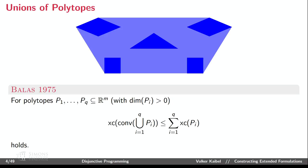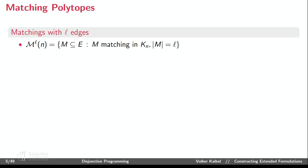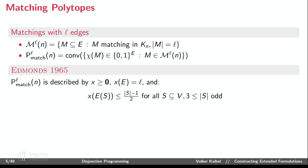Here's an example of disjunctive programming from work with Dirk Oliver Tice and Kostya Paszkowicz, about describing the polytope associated with matchings of prescribed size L in a complete graph. We know from Edmonds' work that we can describe the matching polytope by blossom inequalities — exponentially many in the number of nodes. Adding the cardinality restriction is fine, but we want to do better.